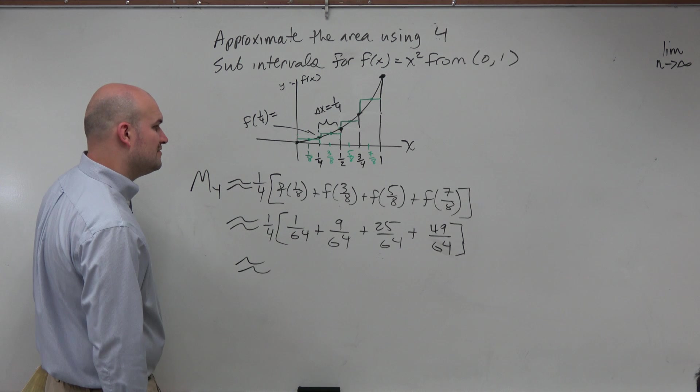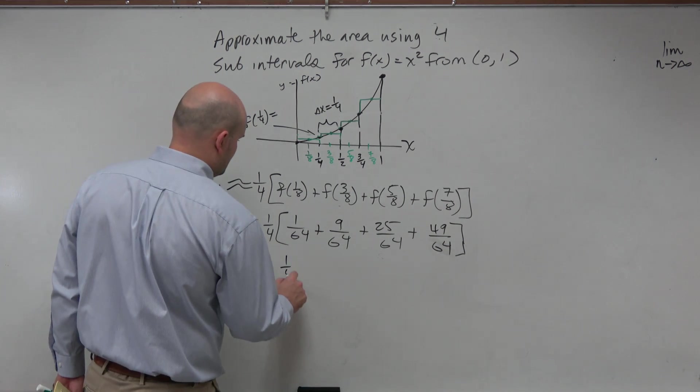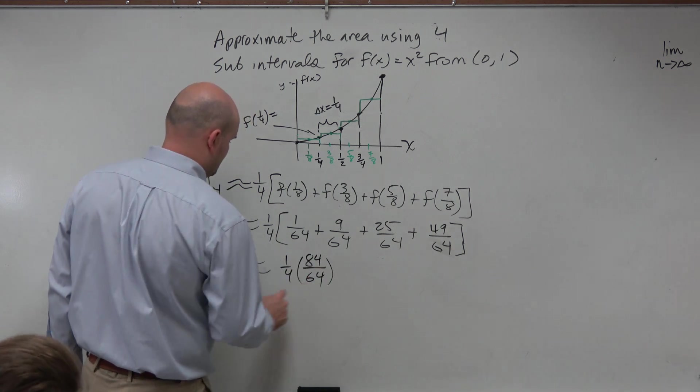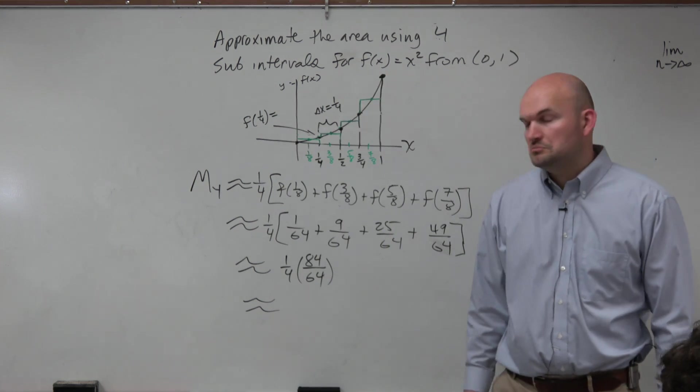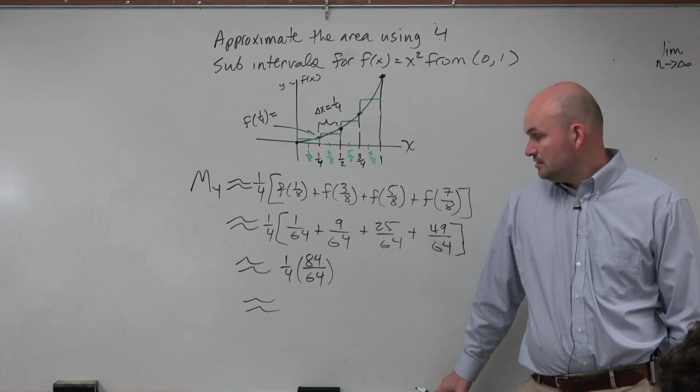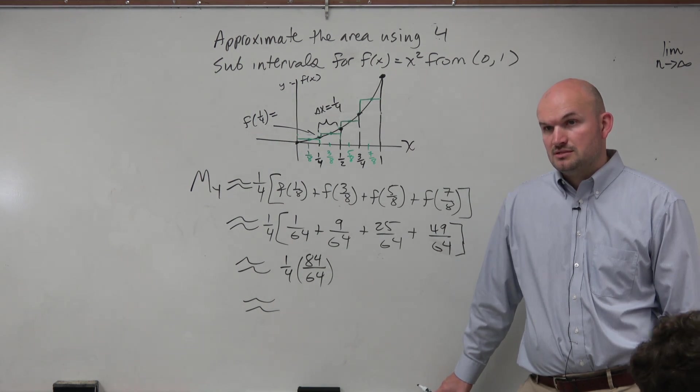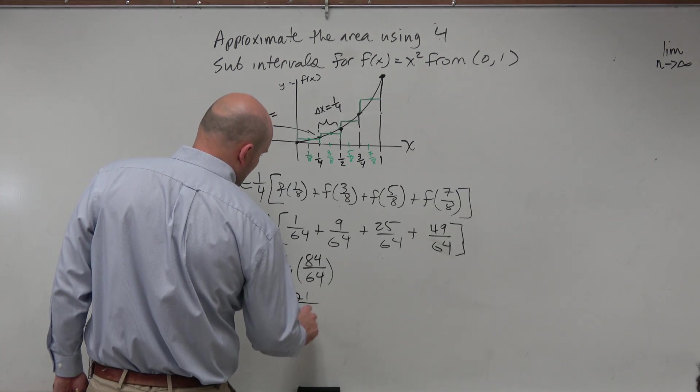So let's just go ahead and add these up. So we have 10, we have 35, and that's going to be 84. All right. And then 4 divides into 80. Let's see. That's going to be, what, 20, 21 times? Yes? So therefore, that's 21 over 64.